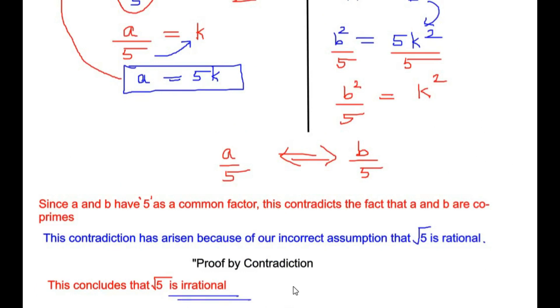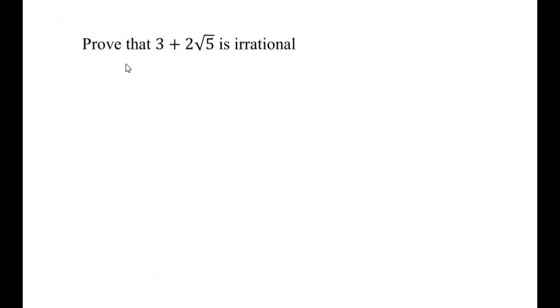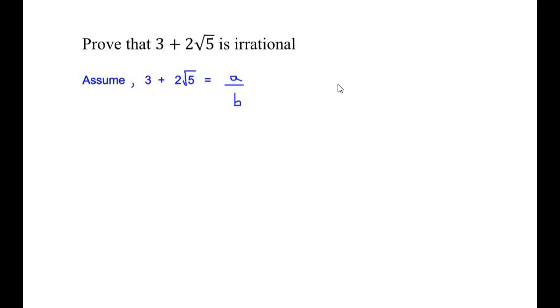Now let us look at the next question: prove that 3 plus 2 square root of 5 is irrational. Again we are going to use proof by contradiction and write: assume that 3 plus 2 root 5 equals a over b, where a and b are co-primes and integers — meaning the highest common factor of a and b is just 1, and no other number can divide both a and b.